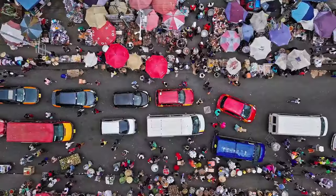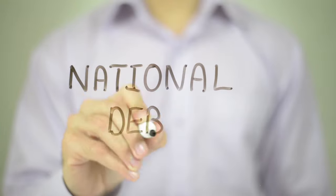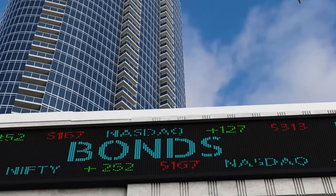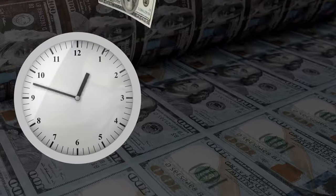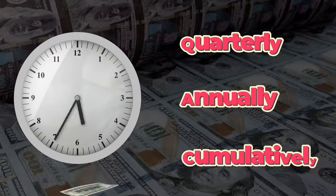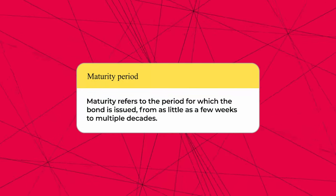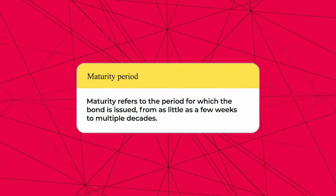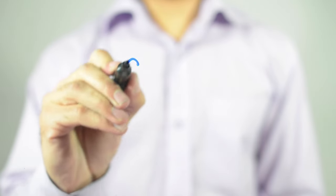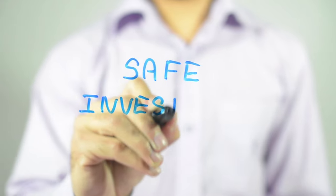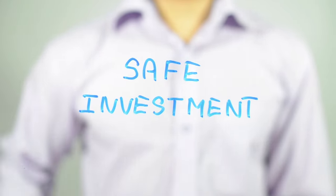The citizens of a nation can lend money to their government, which adds to the national debt. To do this, the government issues bonds with a fixed interest rate to be paid to the lender. This could be paid quarterly, annually, or cumulatively at the end of its maturity. Maturity refers to the period for which the bond is issued, from as little as a few weeks to multiple decades. Government bonds are considered one of the safest financial instruments because it's the government that guarantees to return the money after maturity.